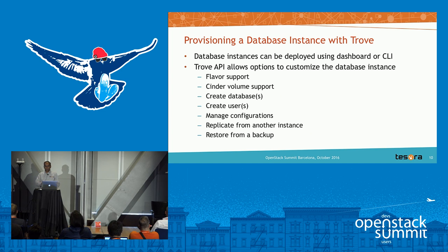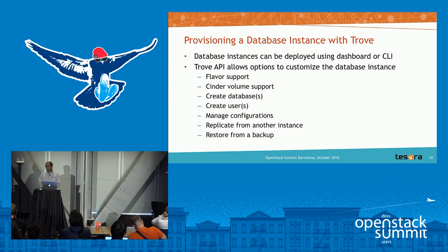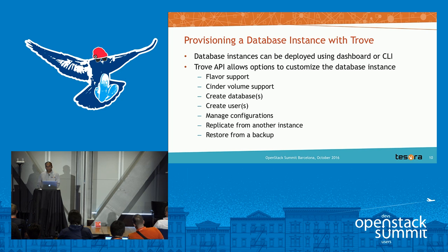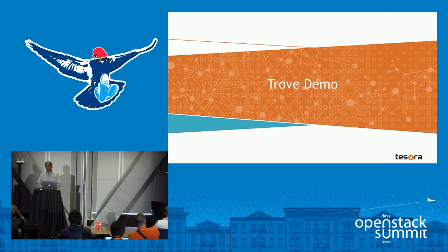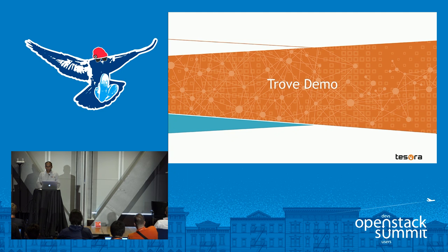Just like any other OpenStack service, you can create a database instance through command line or a graphical user interface. You have full flavor support — start with M1 large or extra large and go up or down. You have Cinder volume support, starting with a small volume and increasing as your database grows. Using the Trove API you can create databases, users, and create backups and restore from them. Let me quickly show you how it looks in the UI.